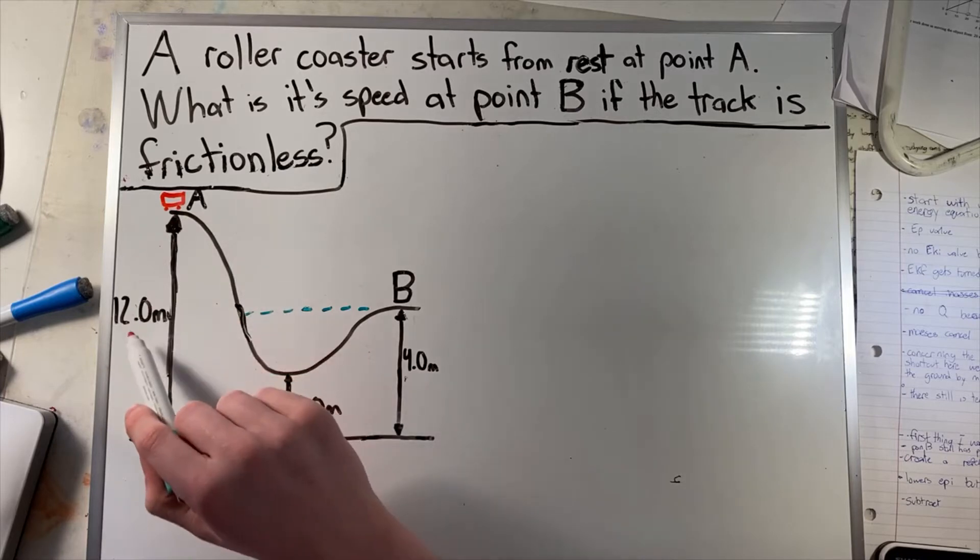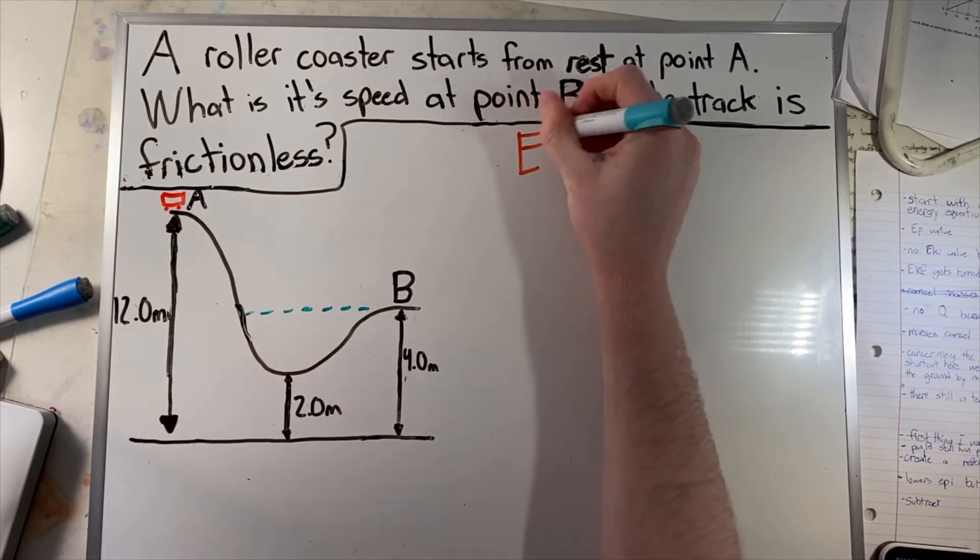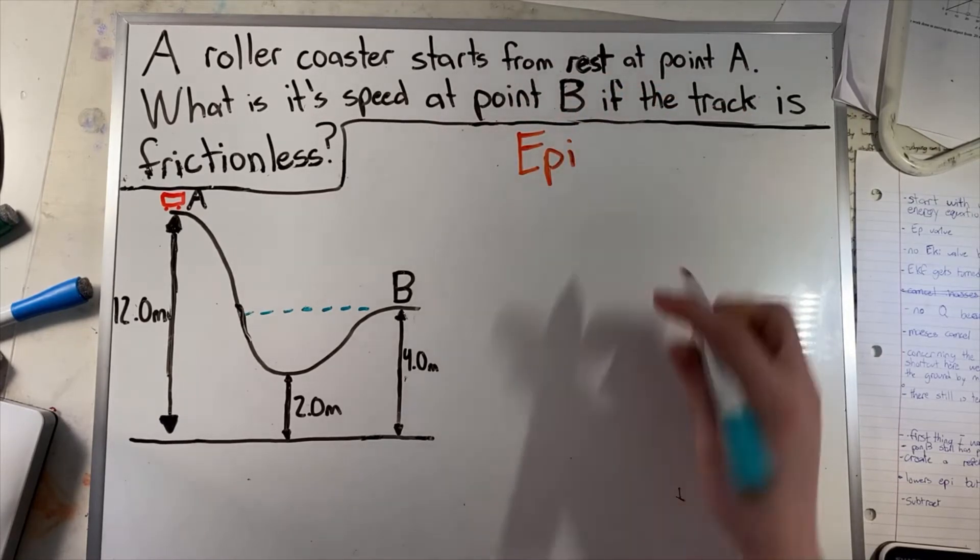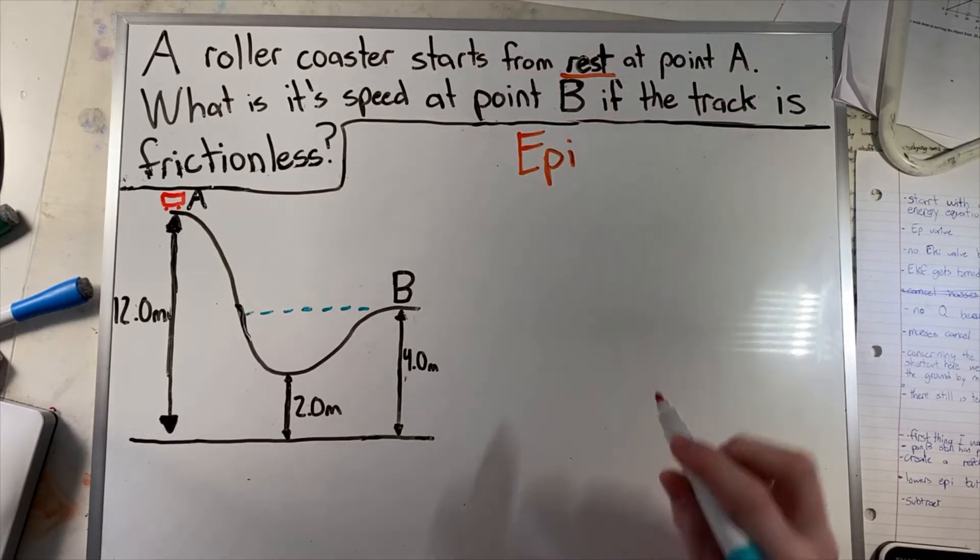Since point A is 12 meters off the ground, it has some potential energy, which we can write as EPI. There is no initial kinetic energy because the question states the roller coaster starts from rest, so we can ignore that.